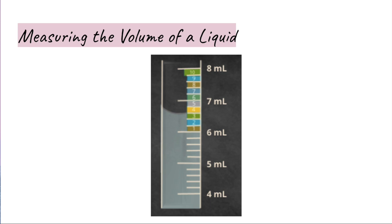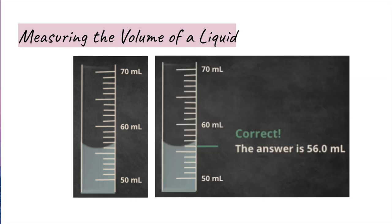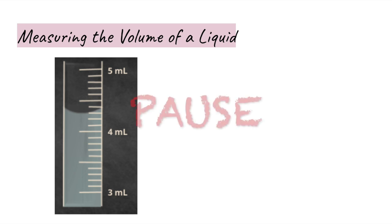We estimate one decimal place past the smallest scale division on the graduated cylinder. So if each line increases by 0.2 mL (tenths place), we should estimate the final digit to the hundredths place. For example, if the value of each subgraduate is 1 mL, and the meniscus reads at the lowest point of the curved surface, the volume of the cylinder is 56.0 milliliters. Now pause this video and try the next one.